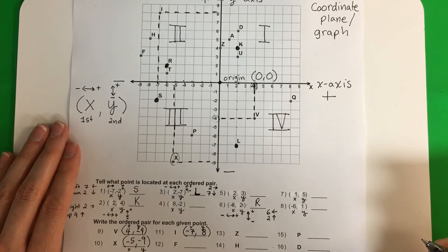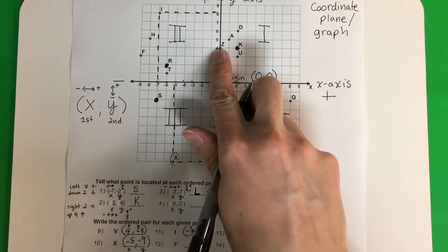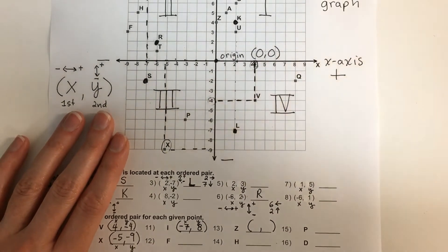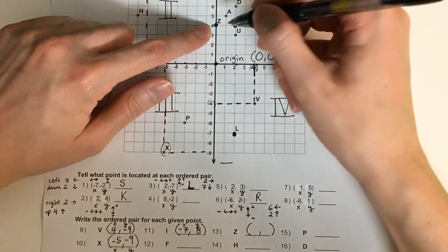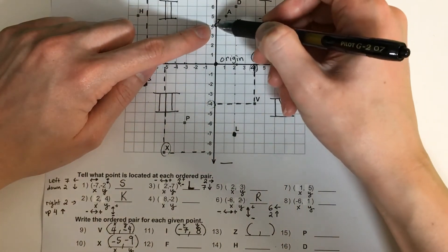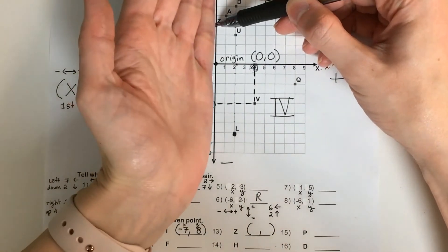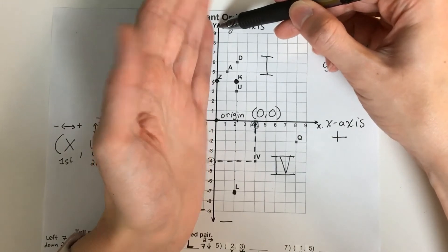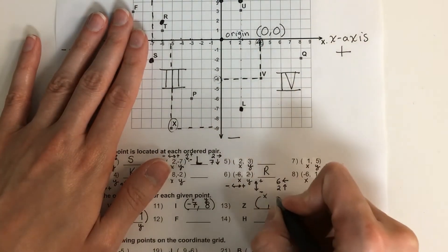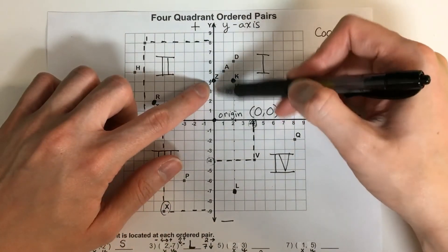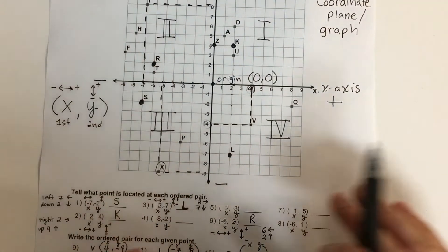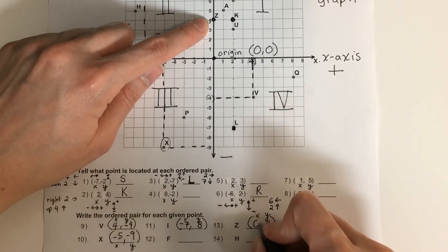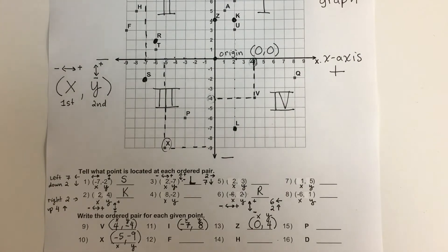Let's try number thirteen — Z. Let's find Z. This one's a hard one. It looks like Z is only touching one number: four. Now, this four is on the y-axis line. Four is y. No number for x, so zero. If it's touching a line, you're going to need to use zero. The ordered pair is (0, 4).